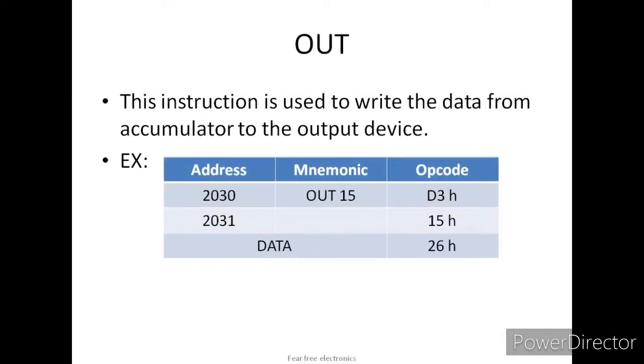For example, I assume that at address 2030, OUT 15h is the mnemonic. OUT is a 2-byte instruction. OUT is an opcode. The address is also part of the opcode, which is a hexadecimal value. It is 1 byte. The address 15h is for output devices and input devices, which have an 8-bit address. The total size of this instruction is 2 bytes.